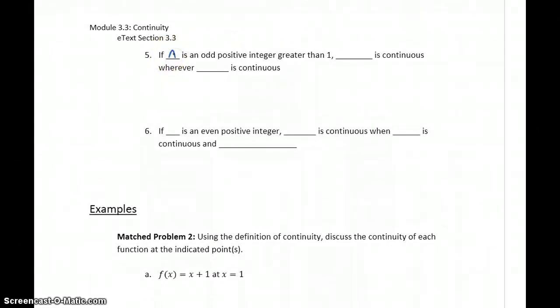If n is an odd positive integer greater than one, then the nth root of f of x is going to be continuous wherever the function f of x is continuous. If n is some even positive integer, then the nth root of f of x is going to be continuous whenever f of x is continuous and non-negative.